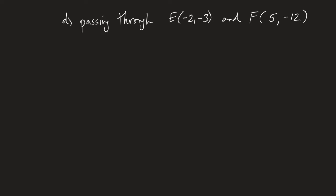Okay, we're back. We recognize we need slope and a point. We have two points, so we need to find slope. Calculate the slope of EF: take one y value and subtract the other, same direction for x. That gets me negative 9 on top over 7, so the slope of EF is negative 9 sevenths. If you made a mistake in slope, pause the video and try to find the equation before we continue.